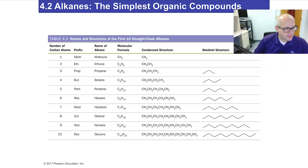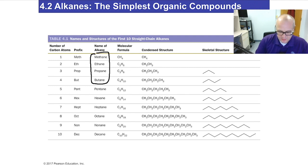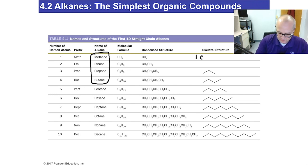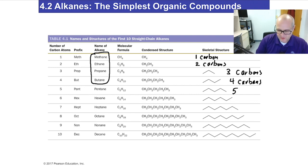Here we have the table of the alkanes, and you're going to want to commit this table to memory. The hardest four are the first four to remember, because they don't actually follow any kind of geometry or logical rules. So the first four are hard to memorize. Methane being one carbon, ethane has two carbons, propane has three carbons, and butane has four carbons. Now, once they get to five carbons, then they start using geometry.